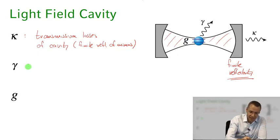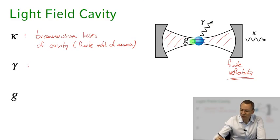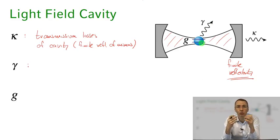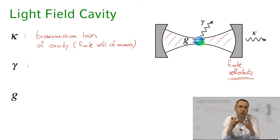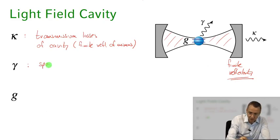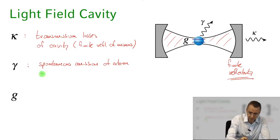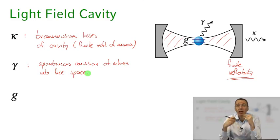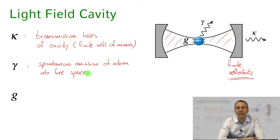Then we have scattering of the atom into free space. Our atom has spontaneous emission, and we remember that spontaneous emission occurs into all modes. The coherent coupling between the atom and the single mode is described by our atom-light Hamiltonian, but there is also spontaneous emission of the atom into free space. This is bad because if the atom is in an excited state and spontaneously emits a photon into free space, that atomic excitation is lost from our coherent dynamics.